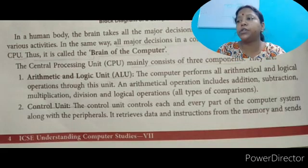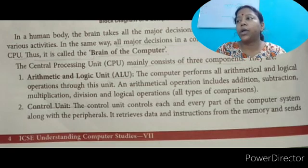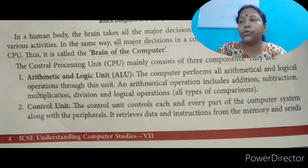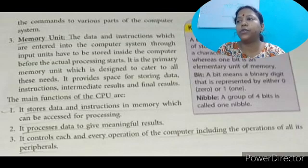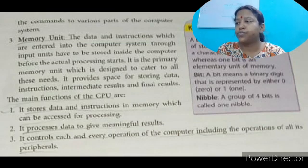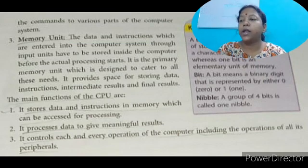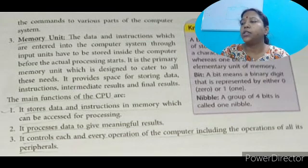The Control Unit controls each and every part of the computer system along with peripherals. It receives data and instructions from the memory and sends commands to the various parts of the computer system. The control unit controls all other peripheral devices including the CPU itself. It receives instructions from memory and then sends them to the various parts of the computer system.